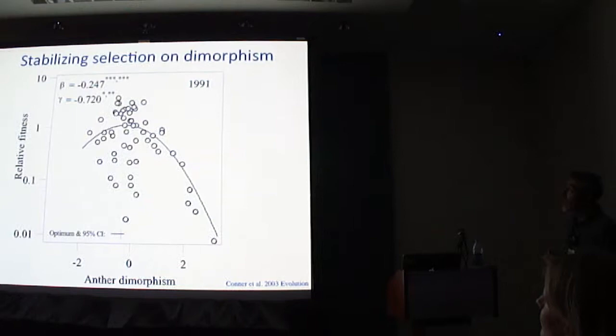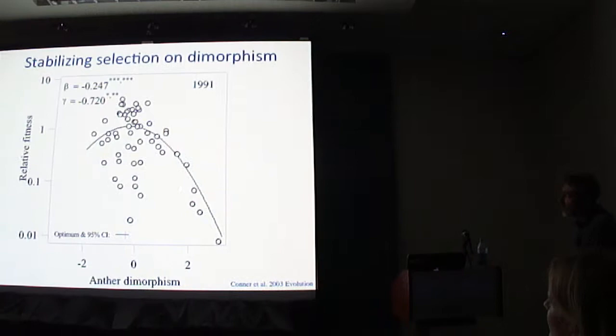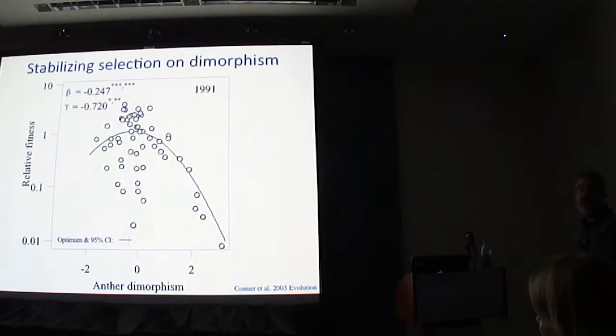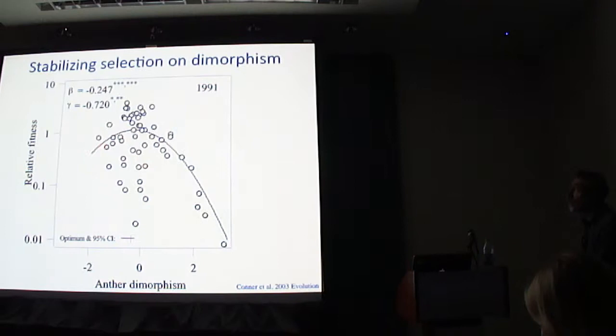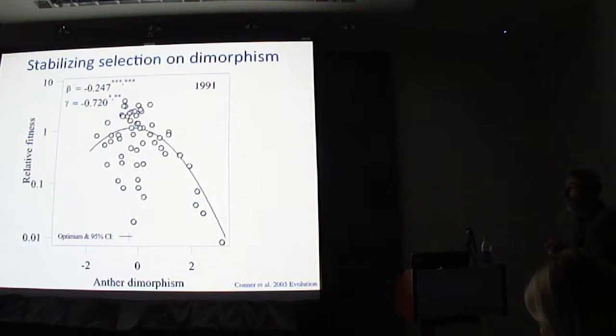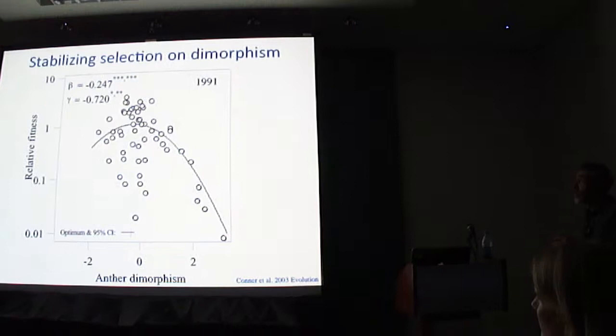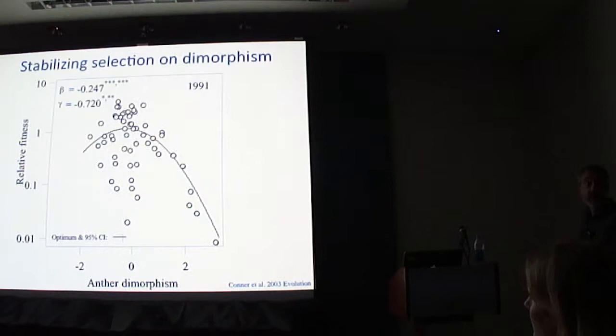What we see is evidence for negative directional selection, highly significant, mostly due to the low-end individuals. But one of these tests that Martin Morgan, my co-author, did was non-parametric. We also found strong evidence for a negative gamma — the quadratic term — which gives you a decreasing slope with increasing values of x. Martin tested for an intermediate optimum, and it's clearly there with a 95% confidence interval. This is the best evidence for stabilizing selection: both extremes have lower fitness than the middle, and the optimum is quite close to the current population mean.